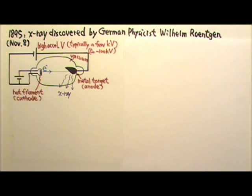He noticed a glow on his fluorescent screen even though there was a piece of black cardboard between his very high voltage cathode ray tube and the screen. The glow was evidently caused by some mysterious invisible radiation that could pass through cardboard. Because of the mysterious nature, Röntgen called this radiation X-rays.